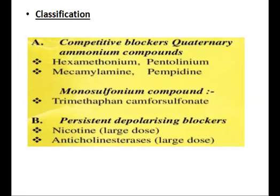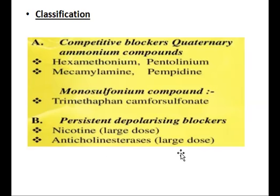Examples of competitive, non-depolarizing blockers include mecamylamine and hexamethonium. As a monosulfonium compound, there is trimethaphan. Among the depolarizing blockers, you find anticholinesterase agents given at large doses, and nicotine when also given at large doses.